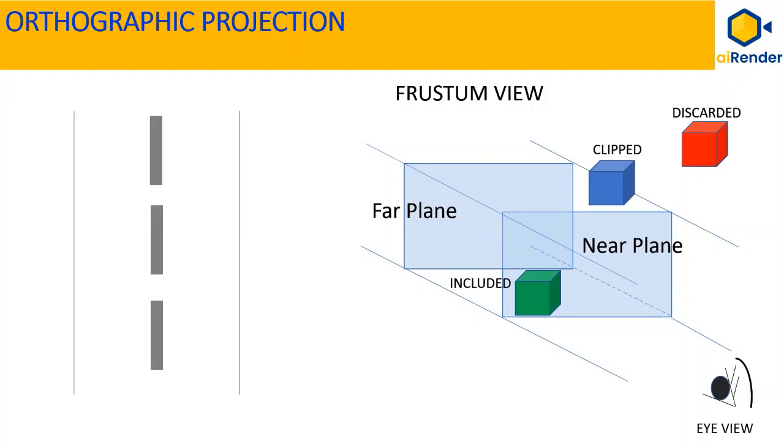The planes are near and far with respect to the viewer's eye or camera position. The space between the near plane and far plane is called a viewing box. The viewing box of orthographic projection is a cube-like frustum box.